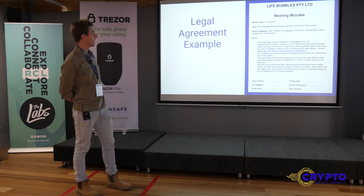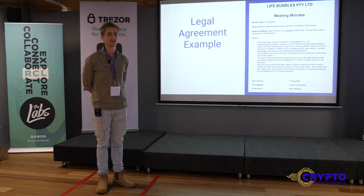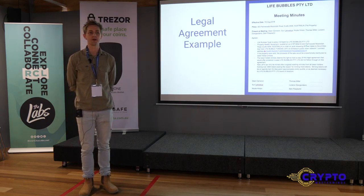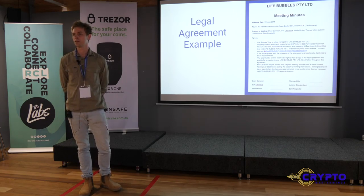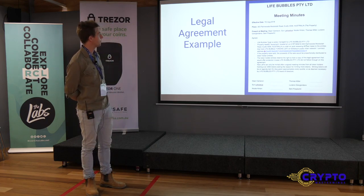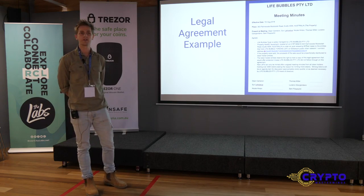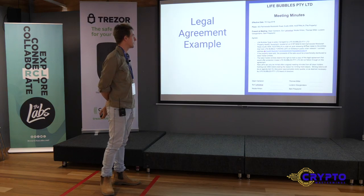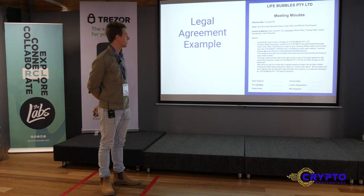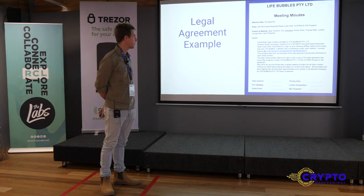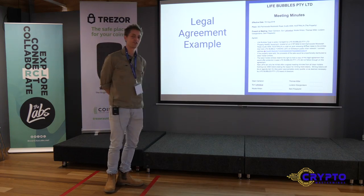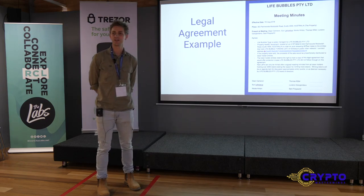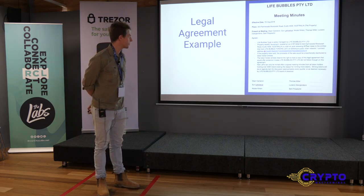Here's an example — take a photo if you want. I'm not a lawyer or accountant, but I've spent enough time with them to realize they're out of their league on this one too. We're in experimental territory. The legal framework we're using is: the property and assets are solely managed by Life Bubbles Pty Ltd — you reference a smart contract, people can look at it. If the property were sold, the proceeds of the sale would be proportionally distributed to the token holder entities. The token holder entity reserves the right to hold a copy of this legal agreement.